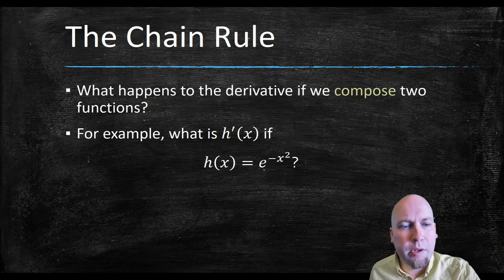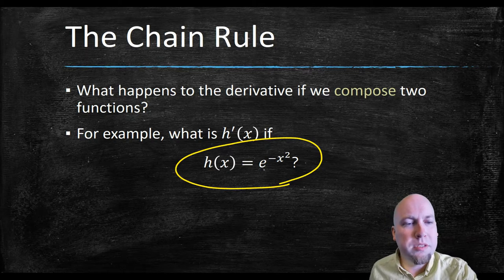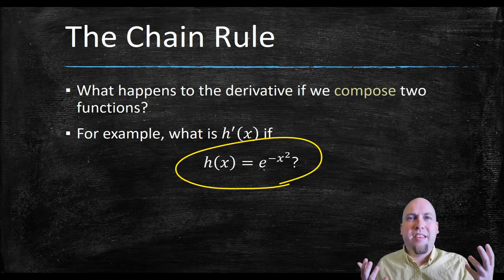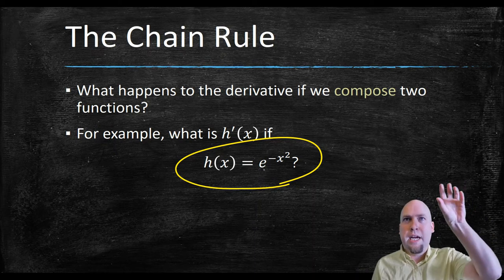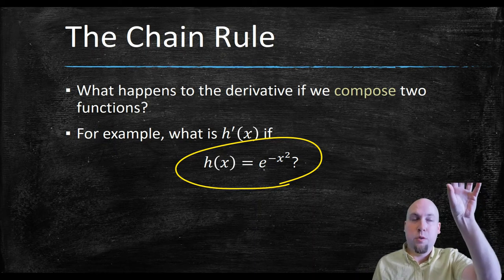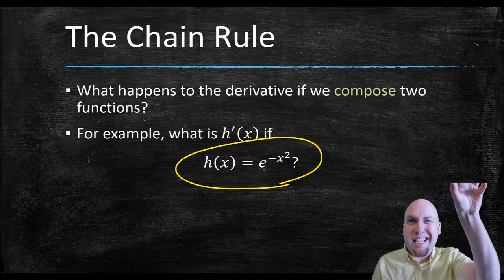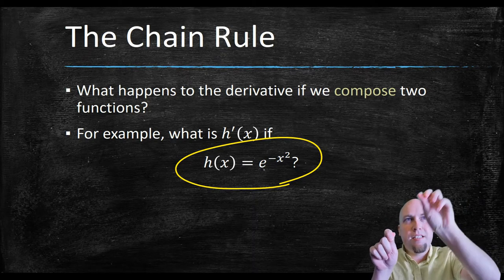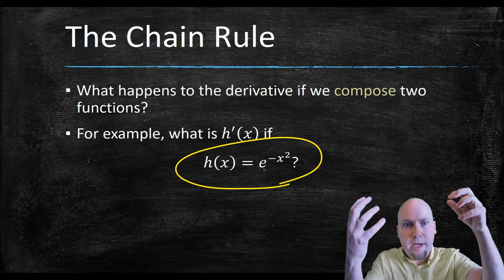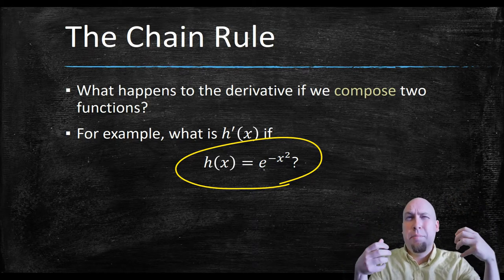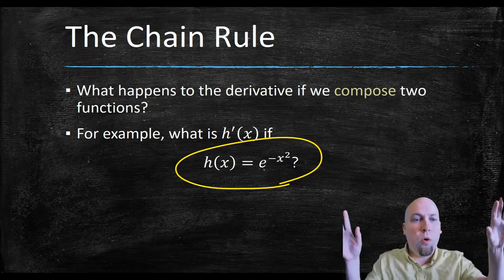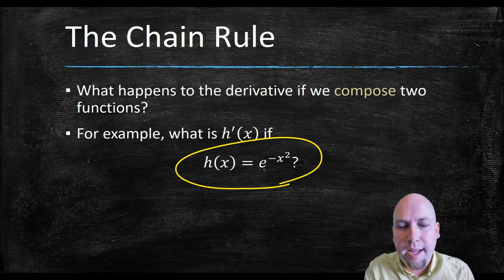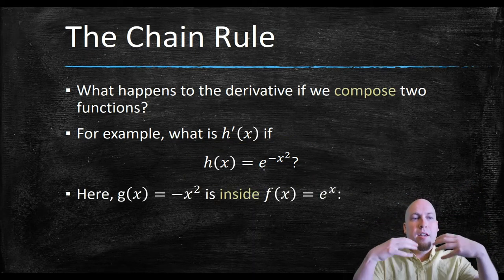For example, if we have a function like h of x equals e to the power of minus x squared, the way to think about that function is there's this minus x squared — we know how to take the derivative of minus x squared — but that's nestled inside another function, the function e to the power of x, which we also know how to take the derivative of. But how do you take the derivative of this whole composite function?